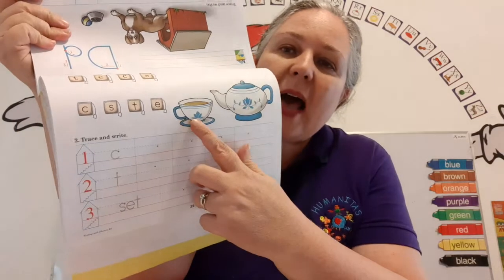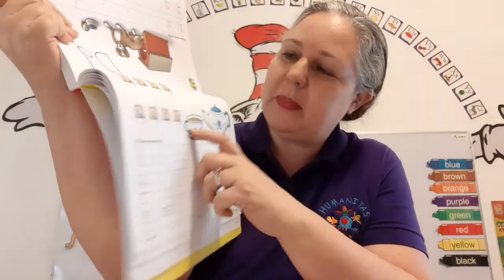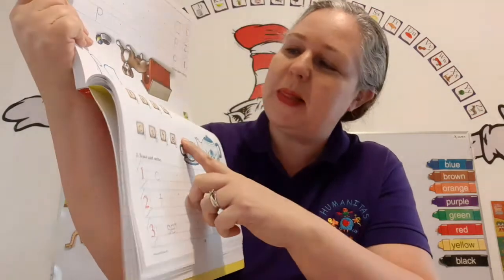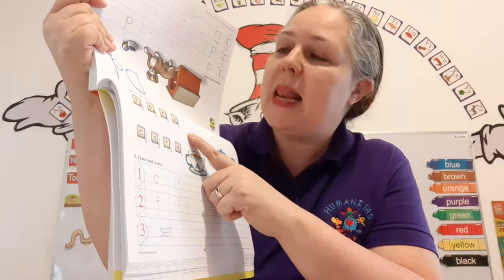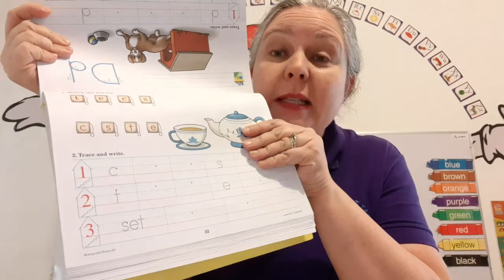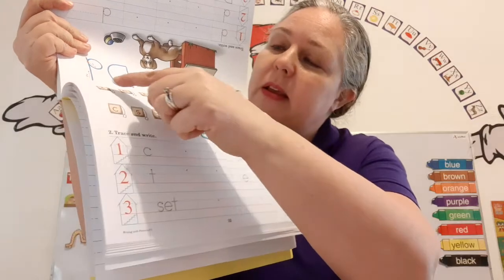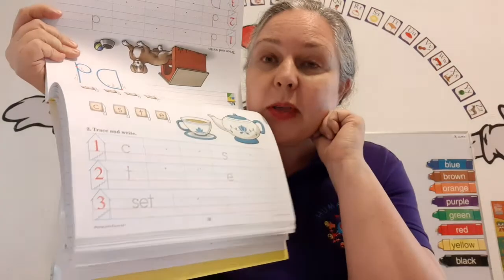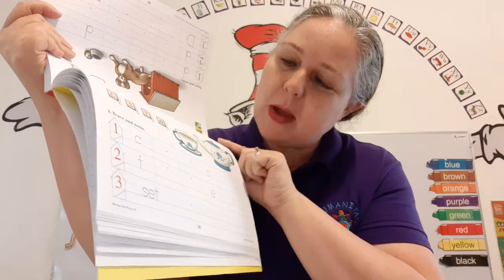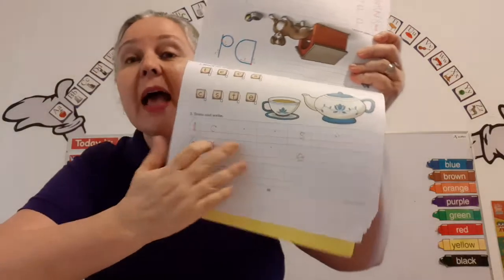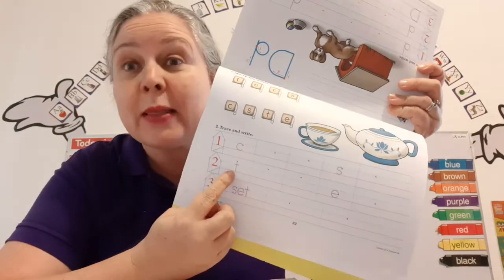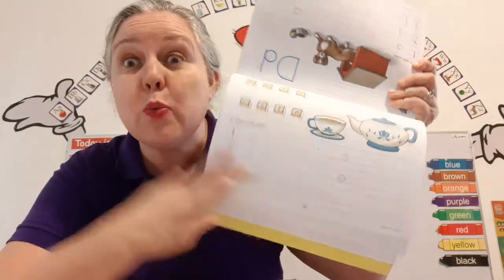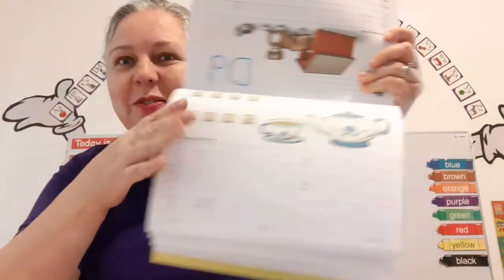Okay, so we have a teapot and here's a teacup. And look, there are little tea bags with letters inside — the lowercase letters. It says match the letters, which means find the ones that are the same and connect them with a line. Number two says trace and write. As you write, say the sound of the letter, or the sound of the blend, or say the word, because we're already writing words. Can you believe it? You guys are amazing.